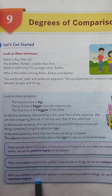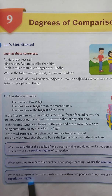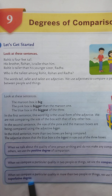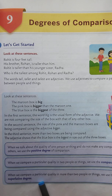When we compare a particular quality in more than two people or things, we use the superlative degree. We use the superlative degree of an adjective when we are comparing more than two persons or things. Example: Mr. Gupta is the richest of all my friends — here I am comparing between more than two persons. Second example: Mumbai is the biggest of all Indian cities — here I am comparing between more than two cities. This is the superlative degree of comparison.